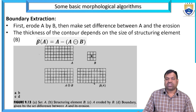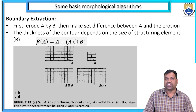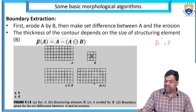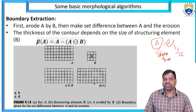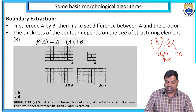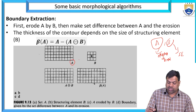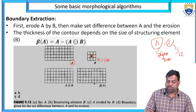For boundary extraction: first, erode — erosion A by B — then make the set difference between A and the erosion. The thickness of the contour depends on the size of the structuring element B. Here A is the original image (road/operator) and B is the structural element SE. We take a 3×3 size with midpoint as the structuring element.